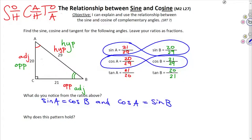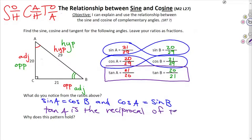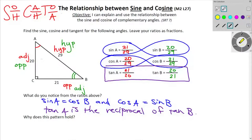That's an important observation. You can also notice that the tangent of A and tangent of B are reciprocals of each other — you flip the fraction over. So the tangent of A is the reciprocal of tangent B. Why does this pattern hold? Why do we have the sine of A equal to the cosine of B, and the cosine of A equal to the sine of B? It boils down to the fact that as you switch the angles, the legs also switch.